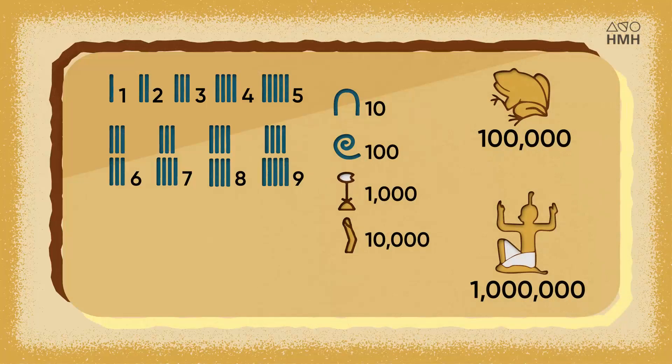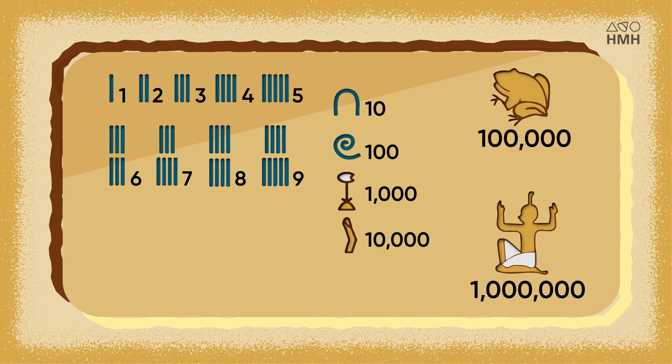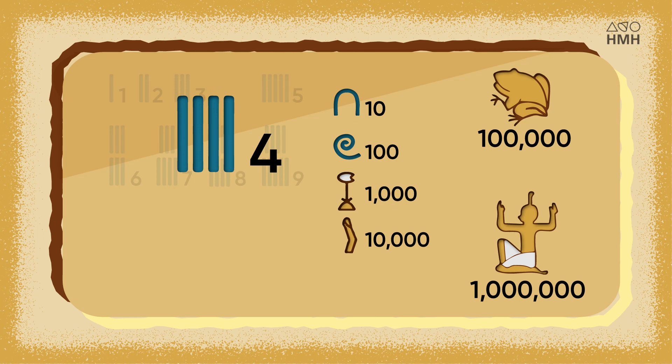And just like Karasthi or Roman numerals, ancient hieroglyphics have different symbols for every power of 10: 1, 10, 100, 1000, and so on. But unlike Karasthi numerals, hieroglyphics don't have a distinct symbol for 4 — they just repeat the 1 symbol 4 times.